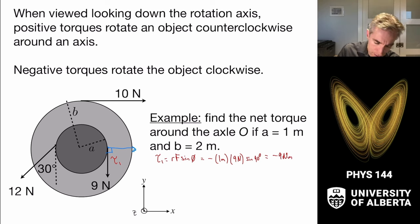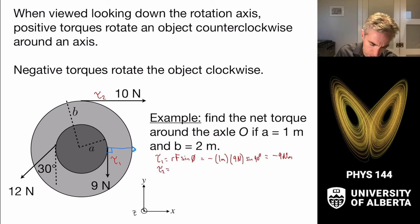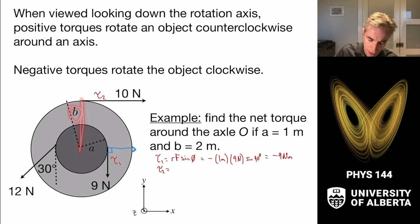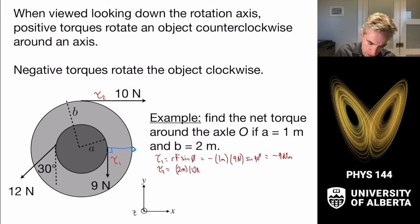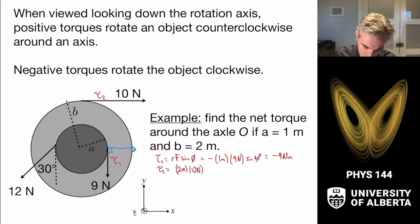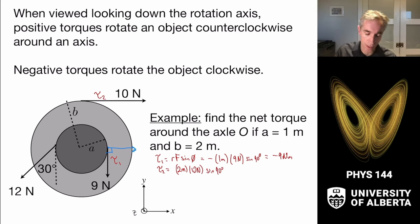For torque 2, R is larger — going from zero out to length B = 2 meters. The force is 10 newtons, acting perpendicular to the moment arm (sine of 90°), in the clockwise direction. So τ₂ = −(2 m)(10 N)(1) = −20 N·m.